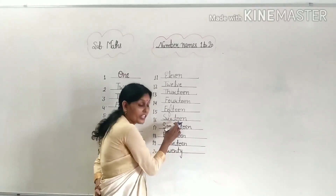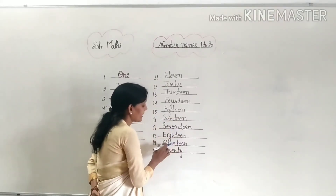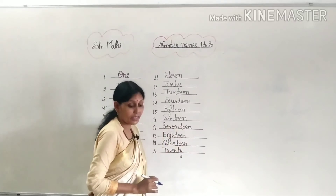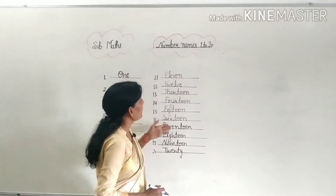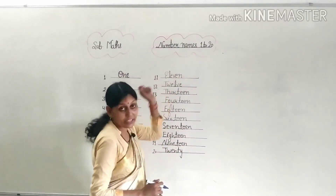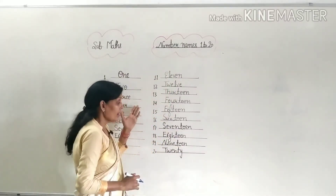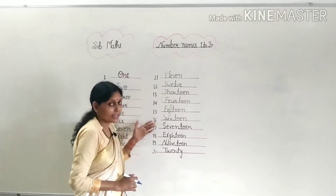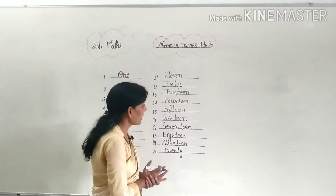15, 16, 17, 18, 19 and 20. We have now completed the spellings from 1 to 20. Learn these well. You need to practice and learn them properly.